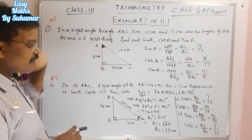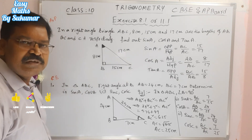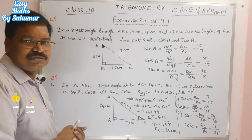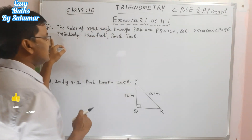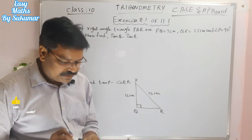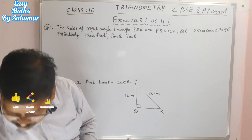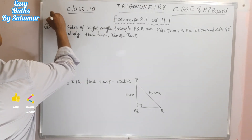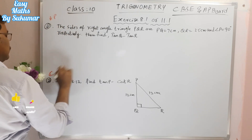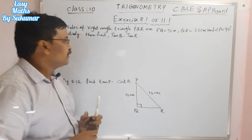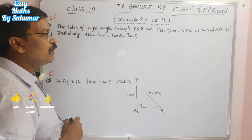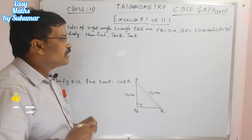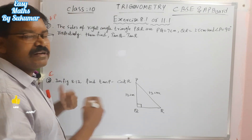Please write these down in your notebooks and do practice also. The second question for AP board students in exercise 11.1: the sides of right triangle PQR — PQ is 7 centimeters, QR is 25 centimeters, angle P is 90 degrees. Find tan Q minus tan R.